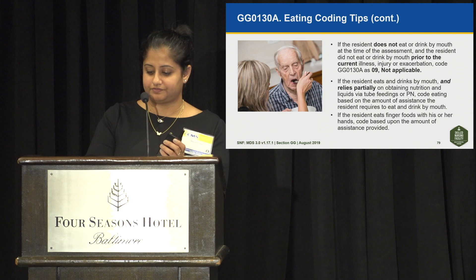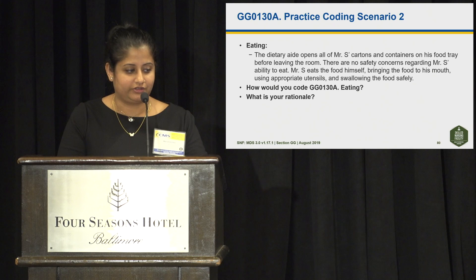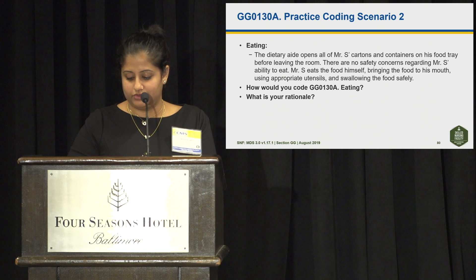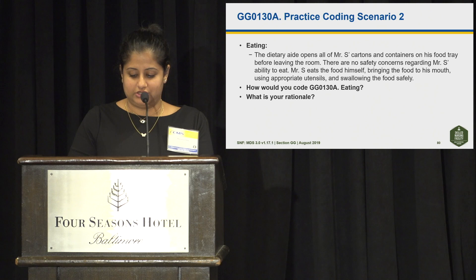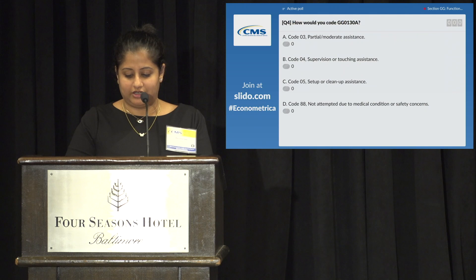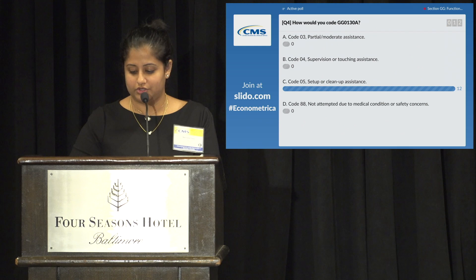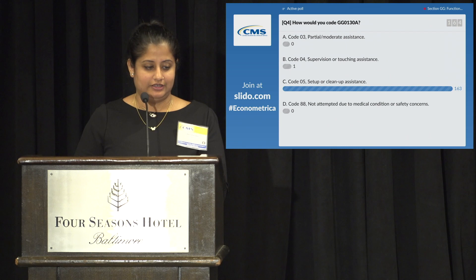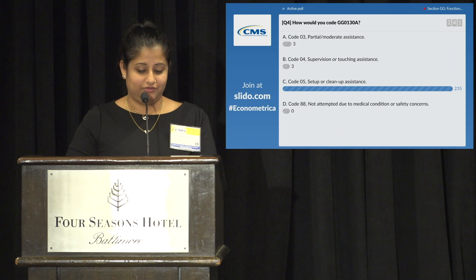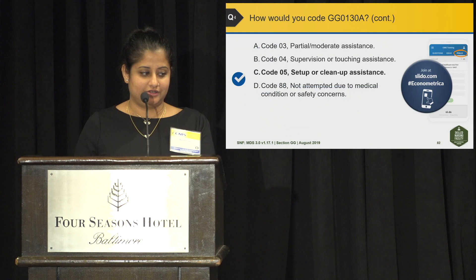Eating practice coding scenario: the dietary aide opens all of Mr. S's cartons and containers on his food tray before leaving the room. There are no safety concerns. Mr. S eats the food himself, bringing it to his mouth using appropriate utensils and swallowing safely. How would you code GG0130A eating? Options: A — 03 partial or moderate assistance; B — 04 supervision or touching assistance; C — 05 setup or cleanup assistance; or D — 88 not attempted due to medical condition or safety concerns. The correct answer is C — 05 setup or cleanup assistance. The rationale is the helper provided setup assistance prior to the eating activity.